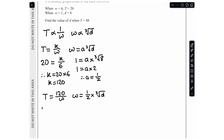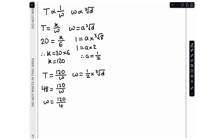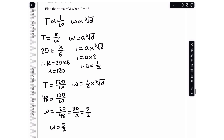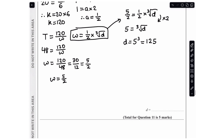So 48 equals 120 over w, giving w equals 120 over 48. Simplifying by dividing top and bottom by 4 gives 30 over 12, and dividing by 6 gives 5 over 2, so w equals 2.5. Substituting into the second equation: 5 over 2 equals one half times the cube root of d. Multiplying both sides by 2 gives 5 equals the cube root of d, so cubing both sides: d equals 5³ which is 125.